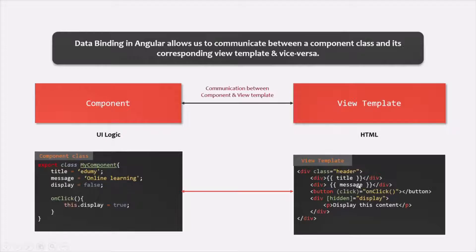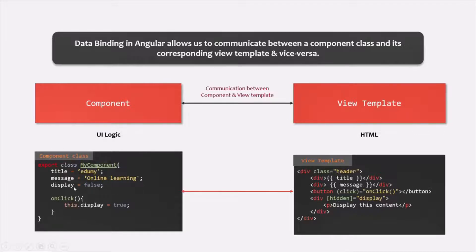In the same way, where we are using the message property, that is also wrapped within double curly braces. So in place of that expression, the value stored in the message property will be rendered. We also have a property called display, and we are using it in this HTML. When we use this display property, we are assigning it to the hidden attribute, but we have wrapped this hidden attribute within square brackets. In this way, the value stored in the display property will be assigned to the hidden attribute. If we don't wrap the hidden attribute within square brackets, it would be like assigning a string value called display to that attribute. So here also, we are passing data from component class — the data stored in the display property — from component class to view template. This is what data binding is.